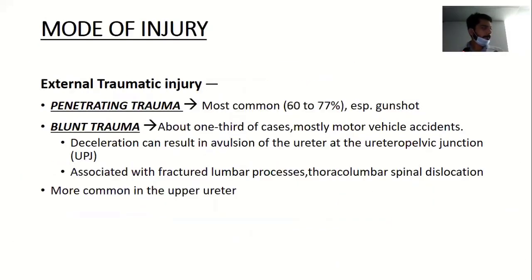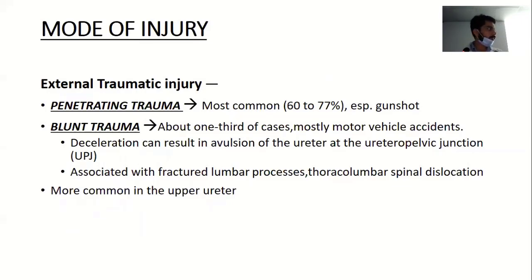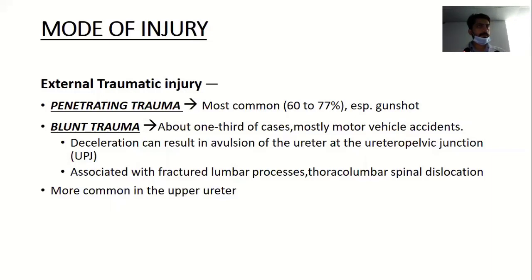Blunt trauma with deceleration injury usually results in avulsion at the ureteropelvic junction. What could be the possible cause for the injury occurring at the ureteropelvic junction? Why not in the mid portion of the ureter? Is there any specific anatomic reason behind it?